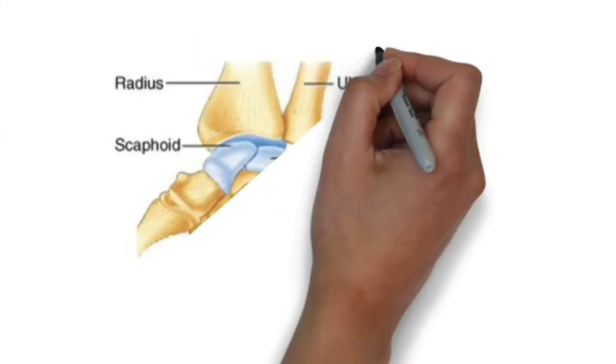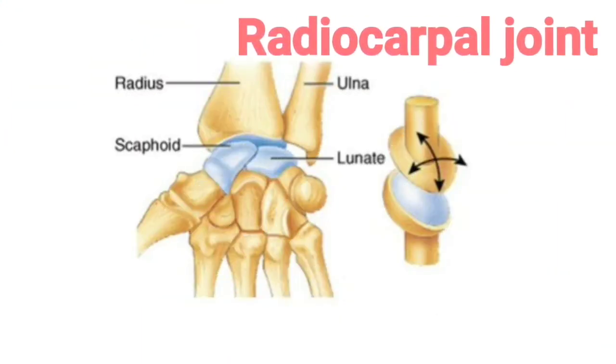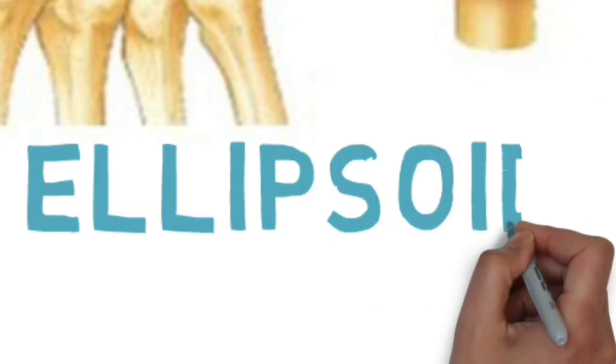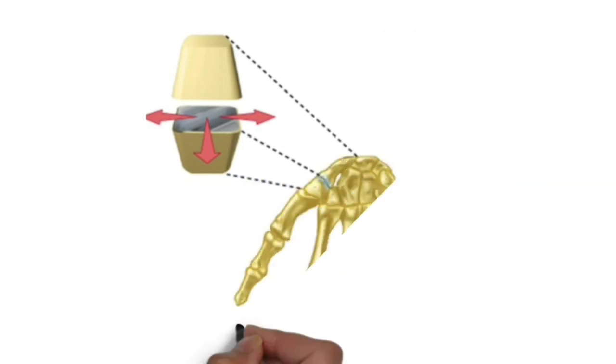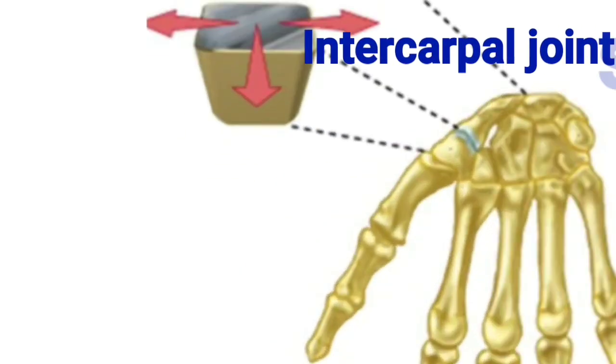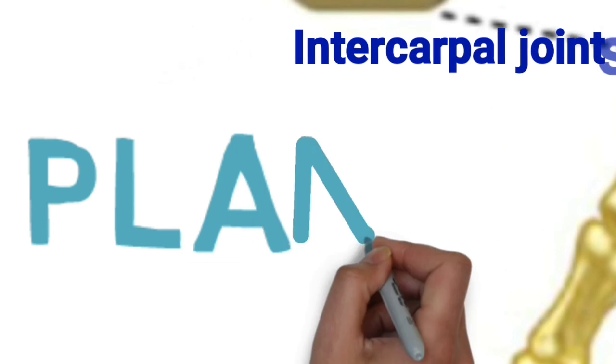The radiocarpal or wrist joint is an example of the ellipsoid variety. The plane or planar joint exhibits only transverse or translational movements. Examples include intracarpal or intertarsal joints.